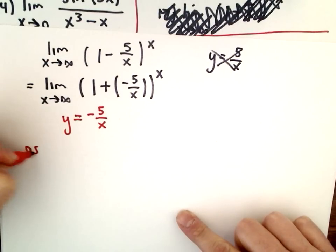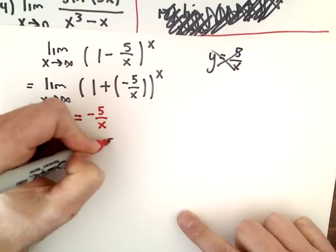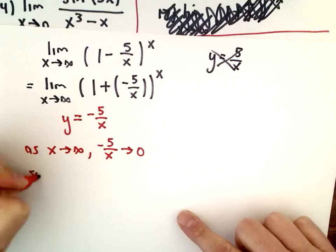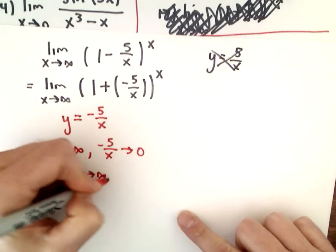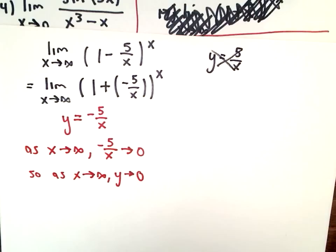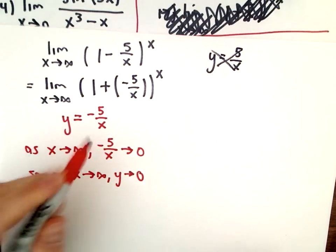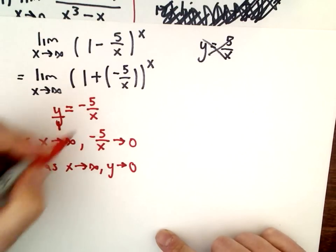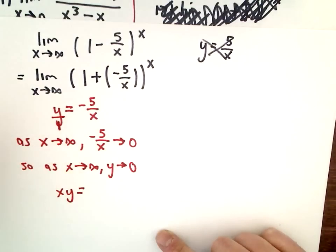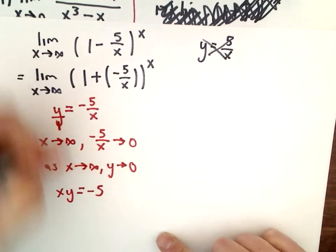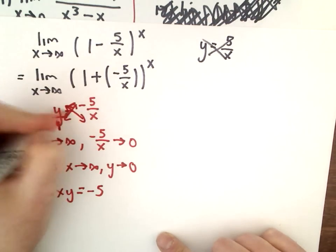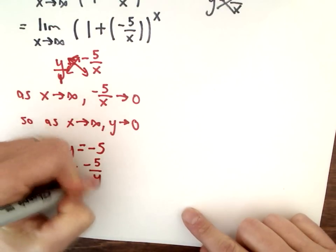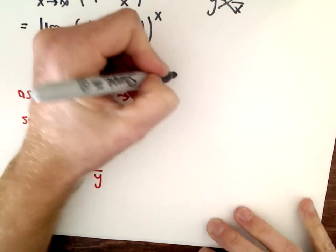Just like before, as x approaches infinity, -5/x approaches 0. Negative 5 over a big number still gets close to 0. So as x approaches infinity, y also goes to 0. Let's solve. You can think of this as y/1. Cross multiply: xy = -5. We're going to solve for x: x = -5/y. Now let's do our relabeling.